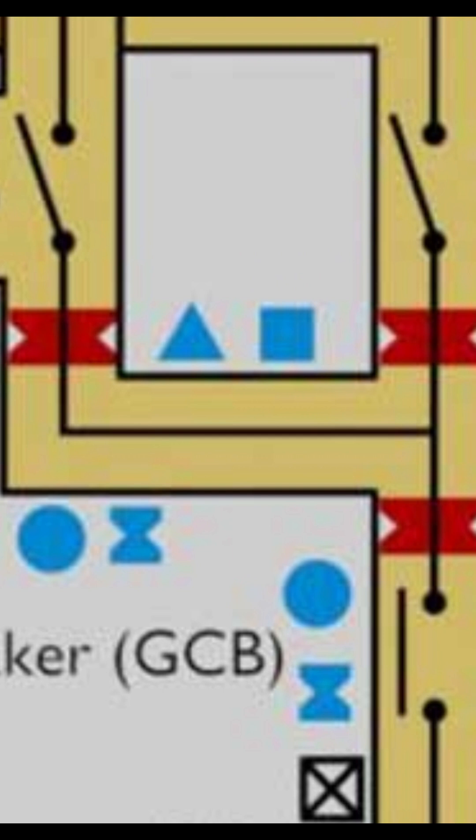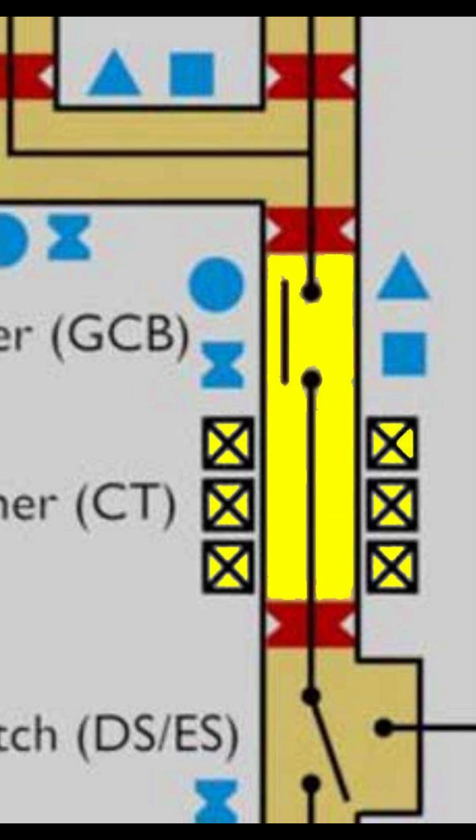Now come to this. This is one gas-tight barrier, this is another gas-tight barrier, and this is another gas-tight barrier. So this is one gas-tight compartment. This is the circuit breaker compartment.